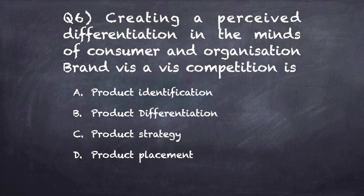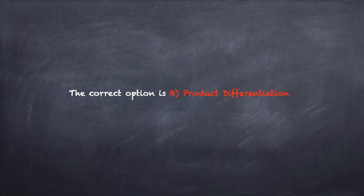Question number six: Creating a perceived differentiation in the minds of consumers and organization brand vis-à-vis competition is? Option A: product identification. Option B: product differentiation. Option C: product strategy. Option D: product placement. The correct option is B, product differentiation.